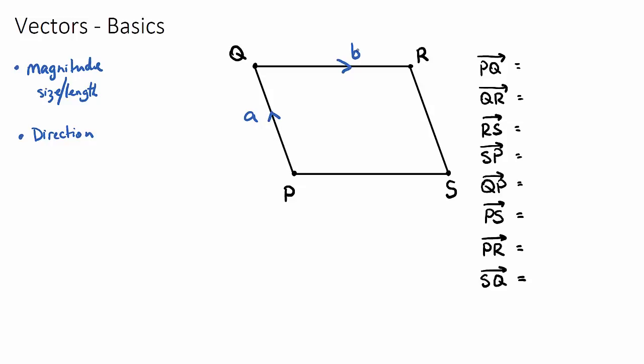Hopefully, by the end of all these examples, you'll have an understanding of what the journey aspect of these vectors means. If you want to go from P to Q, it is clearly defined as vector A, so P to Q is just A. If you want to go from Q all the way to R, it's clearly defined as vector B, so that is just B.